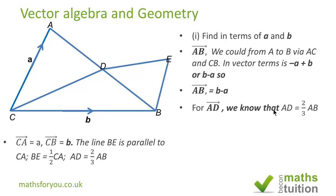Next AD. We know that AD is 2 thirds of AB so Vector AD will now be 2 thirds of Vector AB. So AB is b minus a, so Vector AD is 2 thirds of (b minus a).